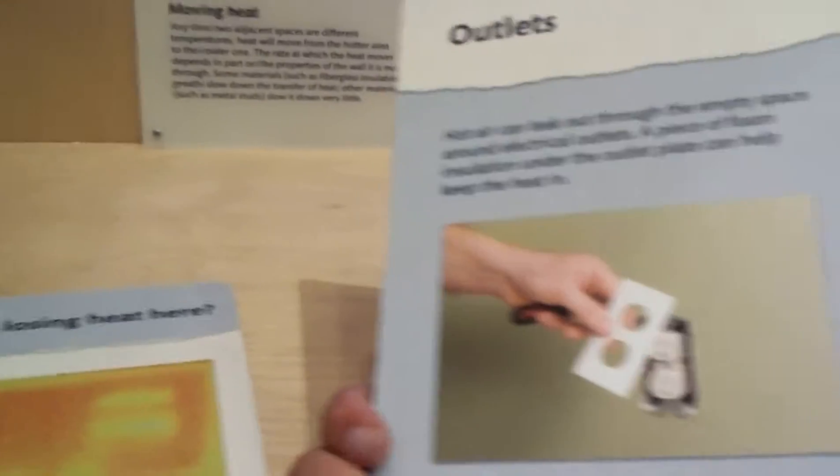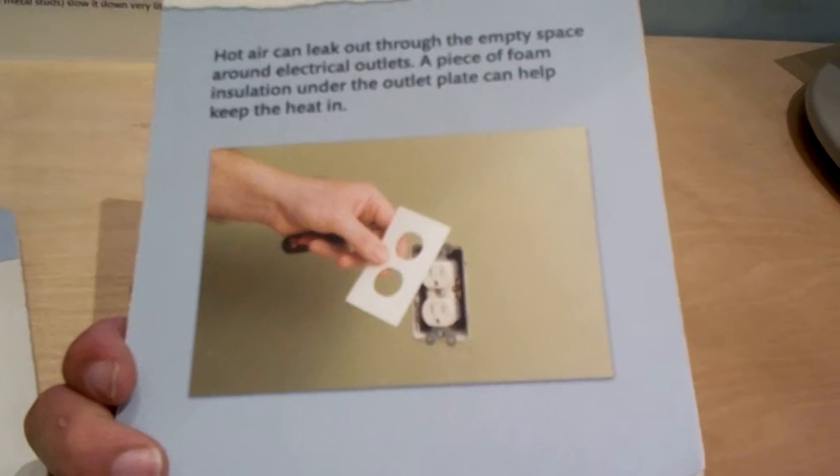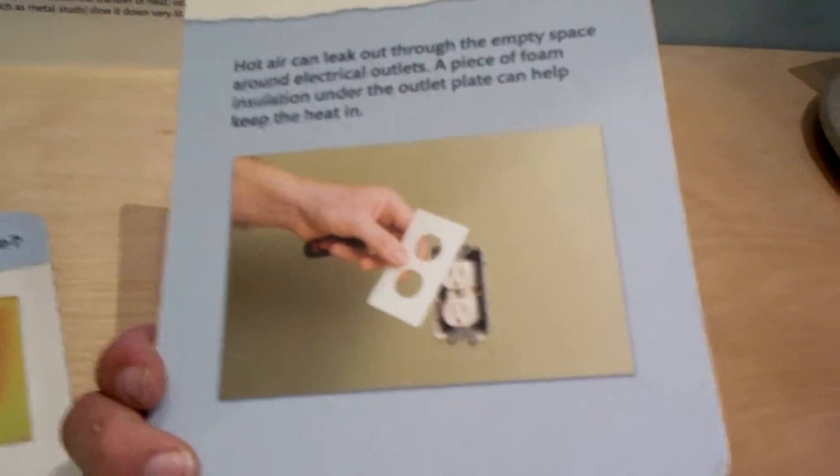It shows what's losing heat here, and it shows you it's around the outlet. But outlets are really bad about losing heat. You can put a little rubber thing around the outside of the outlet because you lose a lot of energy right around an outlet.